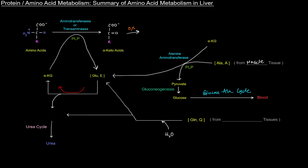The product of that transamination reaction gives us that glutamate there. We also get glutamate from hydrolyzing the amide nitrogen off of glutamine via the glutaminase reaction. That glutamine is coming from a bunch of extra-hepatic tissues — tissues other than the liver.